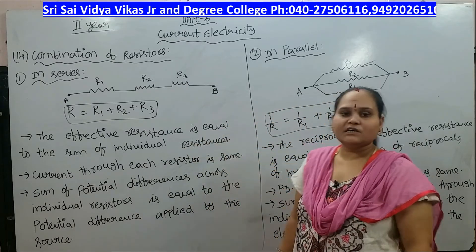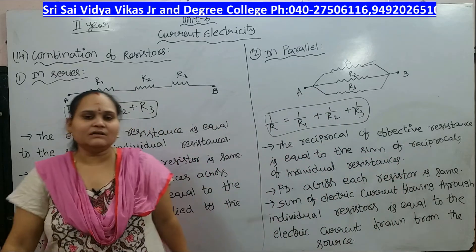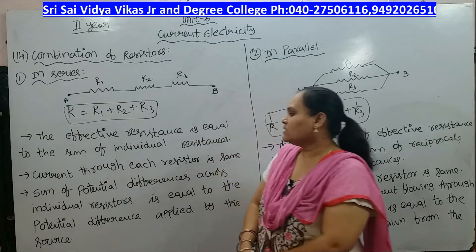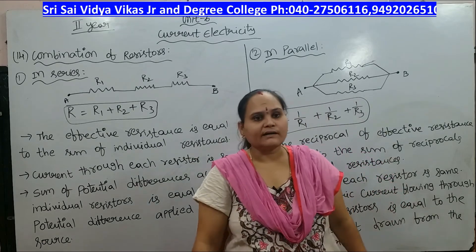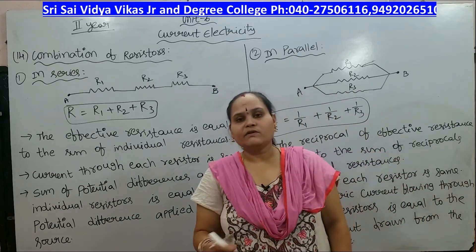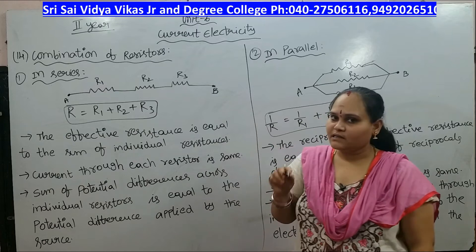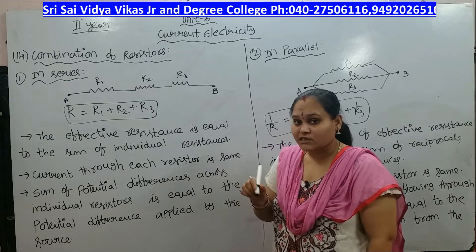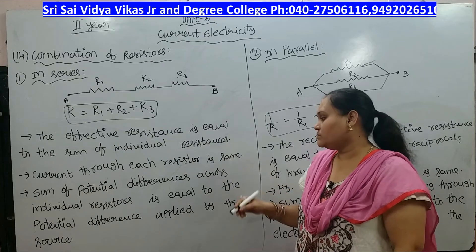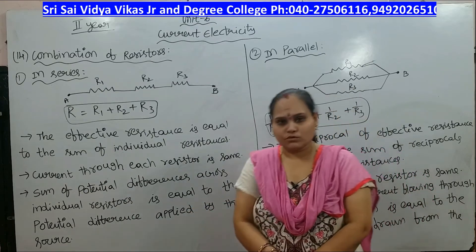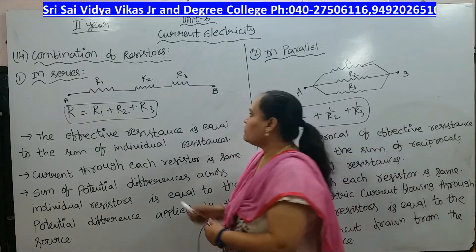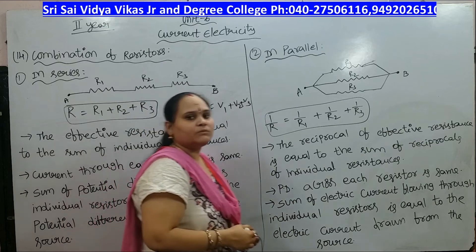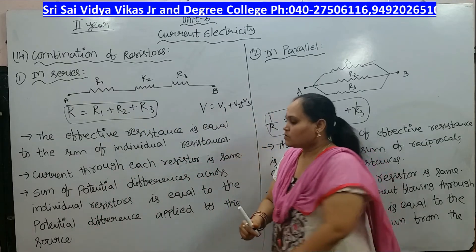In series combination, the effective resistance equals the sum of individual resistances. The current through each resistor is the same — I is same in each resistor. The sum of the potential differences across the individual resistors equals the potential difference applied by the source: V = V1 + V2 + V3.